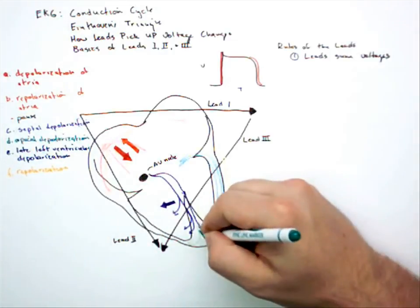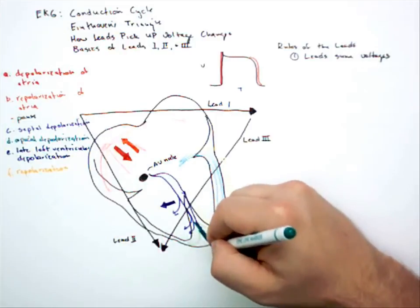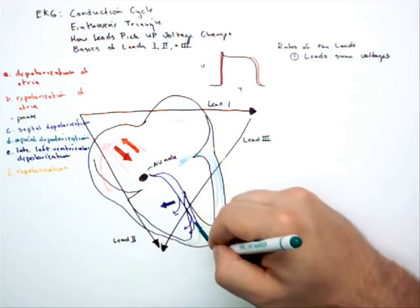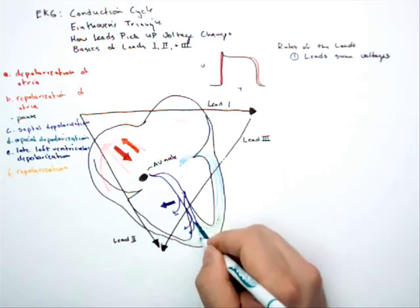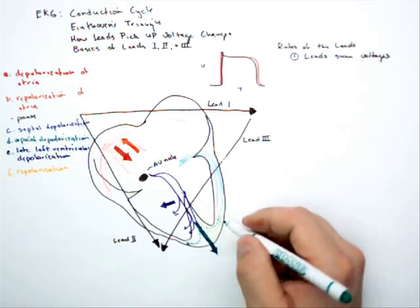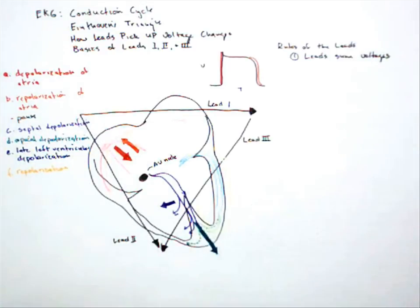Next up is apical. Apical will be summed as a large arrow. It's going to be pointed towards the apex, because even though some current is going in this direction on the right, most of it's going on the left. So our overall sum is going to look like this.